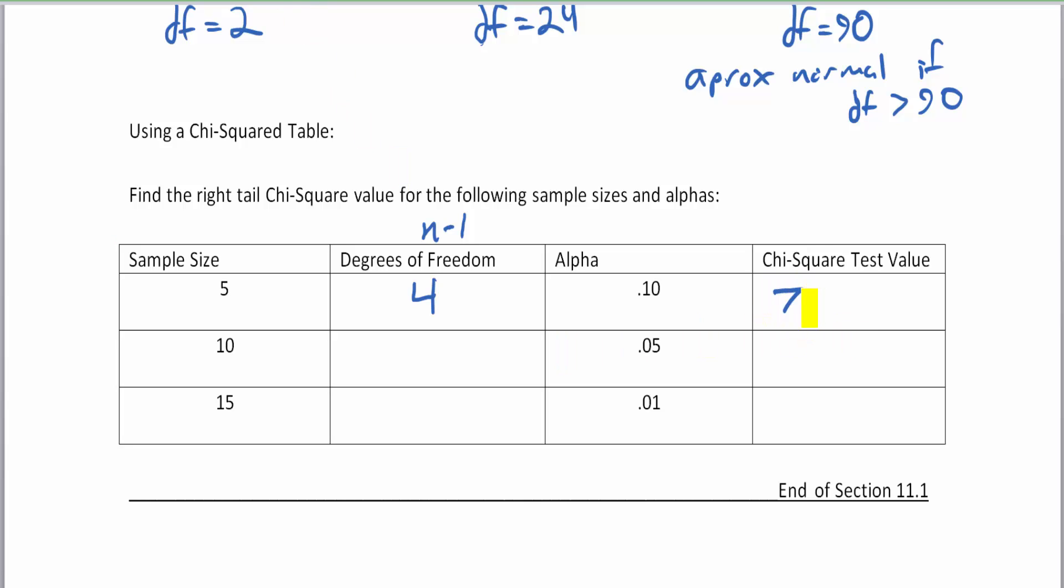If you are doing a confidence interval with chi-squared, this would also be called chi-squared right. But we are going to be doing goodness-of-fit tests, independence tests, and homogeneity tests, which are always skewed right. So we do not need to indicate that this is chi-squared right. This will be our chi-squared test value.